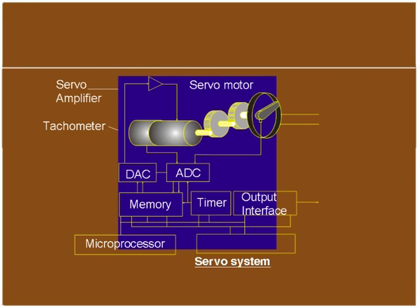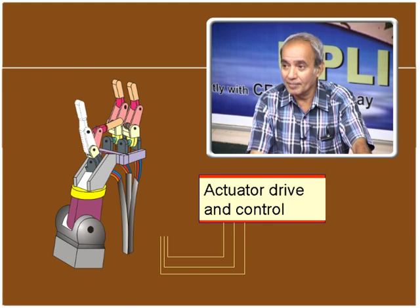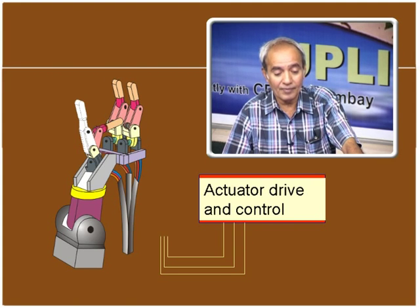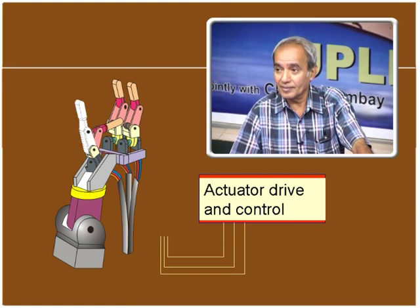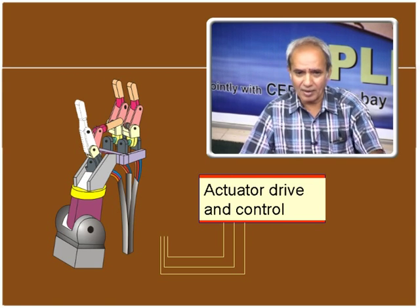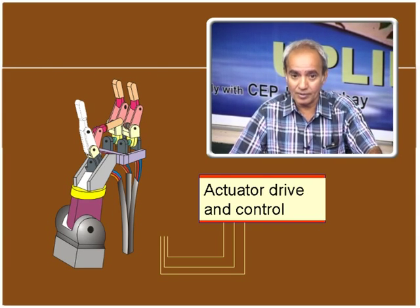Cables and pulleys are also used to drive fingers — similar to cycle brake cables. These fingers have three degrees of freedom and the cables and actuators are remotely positioned. Not only in the laboratory but also on the shop floor, cable drive units and pumps which pick up objects have been deployed.